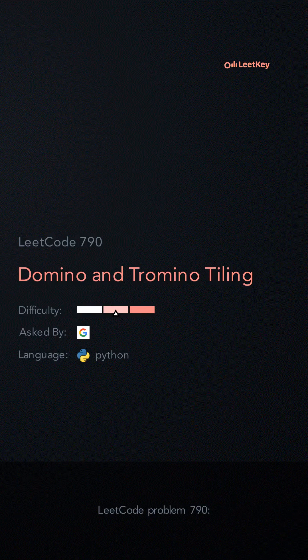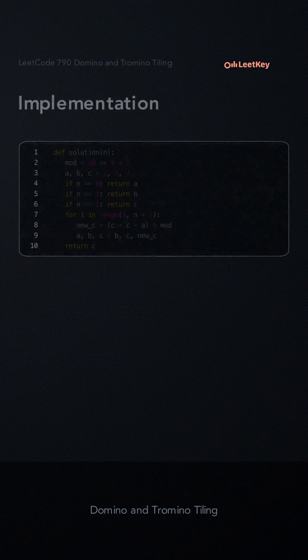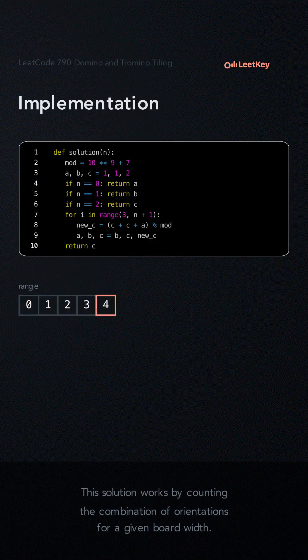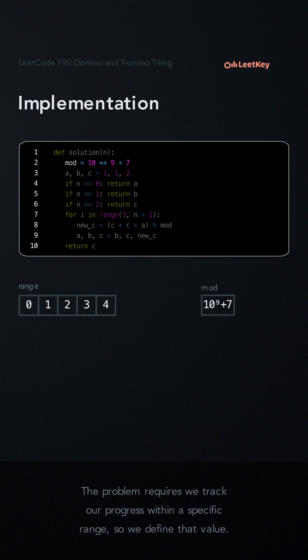LeetCode Problem 790: Domino and Tromino Tiling. This solution works by counting the combination of orientations of tiles for a given board width. The problem requires we track our progress within a specific range, so we define that value.